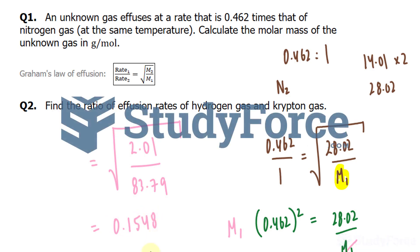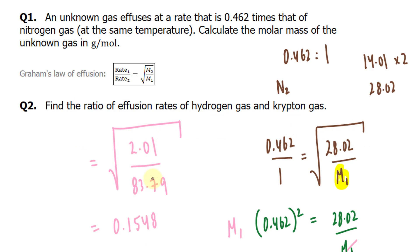And it doesn't really matter the significant figures here, because both of these are technically exact numbers. So I can't say that this is 3 and this is 4, so I should leave it to 3 significant figures. That is the ratio of hydrogen gas to krypton gas.